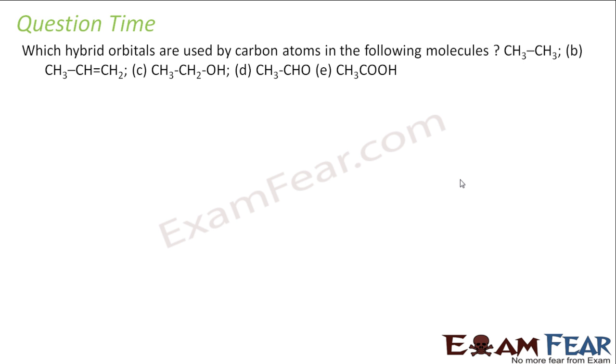Which hybrid orbitals are used by carbon in the following molecules? CH3-CH3, in this case I think sp3 hybrid is used by both carbons. We have seen this. The next one is CH3-CH=CH2. So the moment you have a single bond, it is sp3, so this one is sp3. Double bond, both are sp2. Let's take this CH3-CH2-OH. Both are single bonds, so both are sp3.